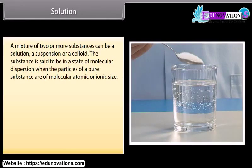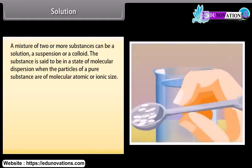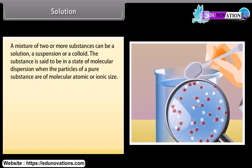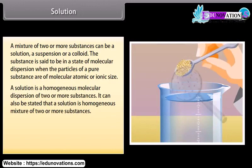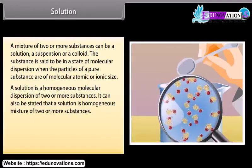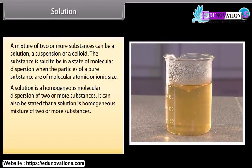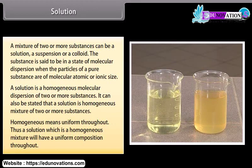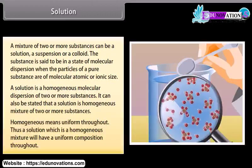A mixture of two or more substances can be a solution, a suspension, or a colloid. A substance is said to be in a state of molecular dispersion when the particles of a pure substance are of molecular, atomic, or ionic size. A solution is a homogeneous molecular dispersion of two or more substances, or equivalently, a homogeneous mixture of two or more substances. Homogeneous means uniform throughout, so a solution will have a uniform composition throughout.